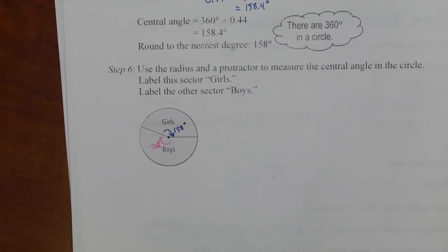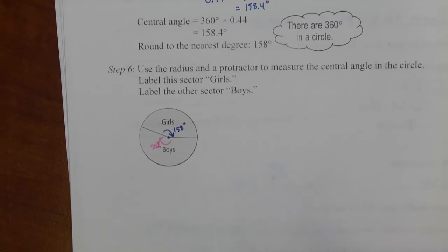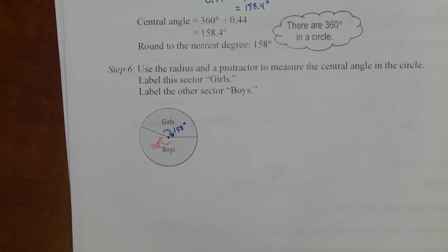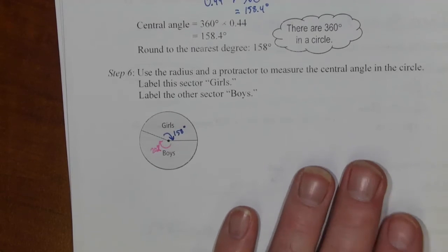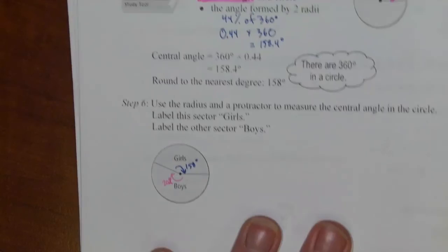Now that's kind of tricky on a small diagram like that. You could take a compass and draw a bigger circle and plot it out, and it would look very similar. It would just look larger, but the proportions should be exactly like that. So that's how you can use a protractor to draw out a circle graph.